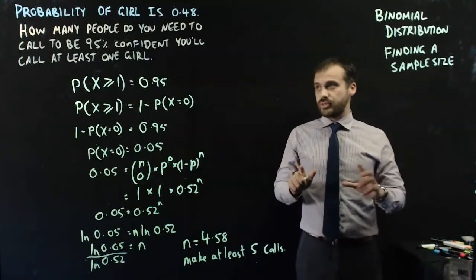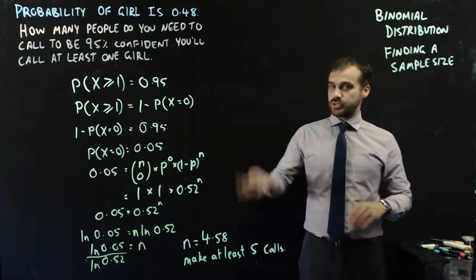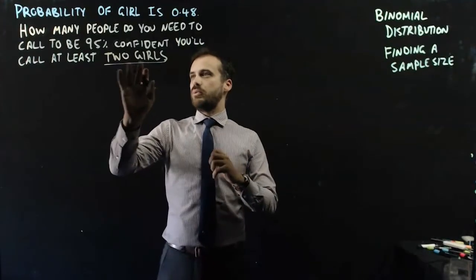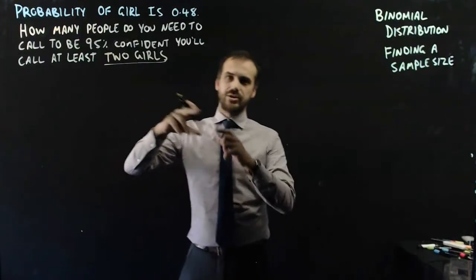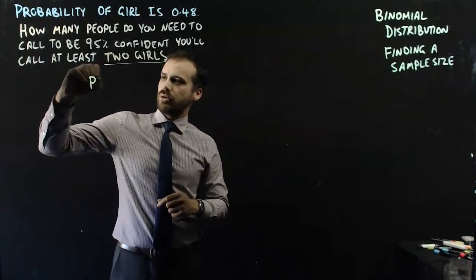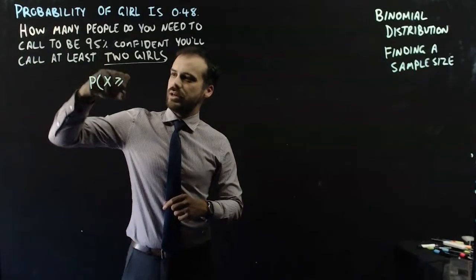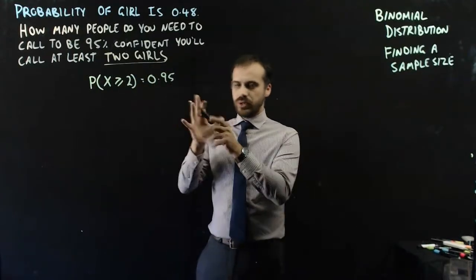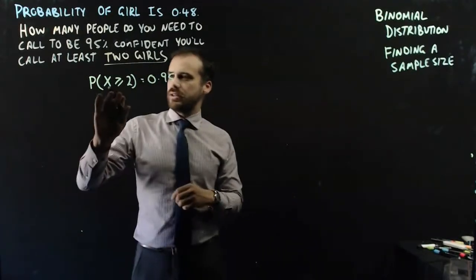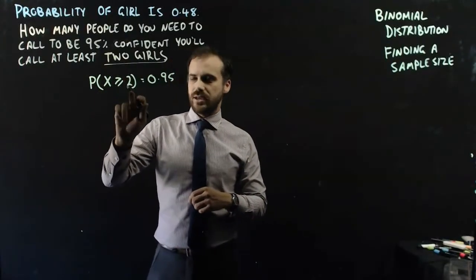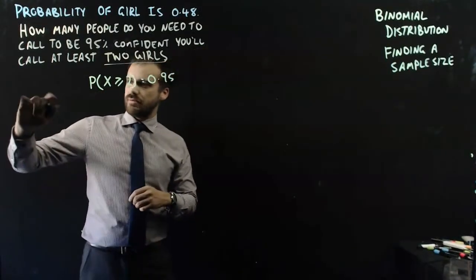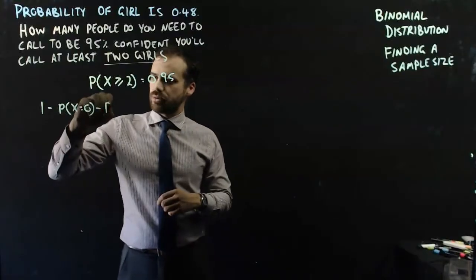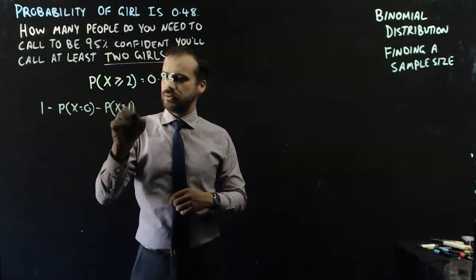That one takes a little bit of thinking. Now we go one step further and change just a little bit about the question — same numbers, same setup, but now we want to be 95% confident we'll call at least two girls. So the probability that x is greater than or equal to 2 must be equal to 0.95.